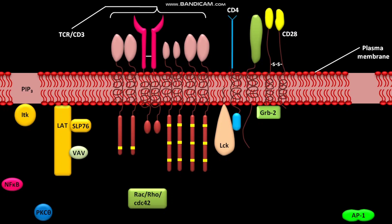Antigen-induced clustering of the receptor-coreceptor complex brings LCK into the vicinity of the membrane-associated CD45. CD45 is a tyrosine phosphatase that removes the inhibitory phosphate group on LCK. Nearby LCK molecules then cause reciprocal phosphorylation at their activating tyrosine sites, which induces LCK to phosphorylate the CD3-ITAM residues.